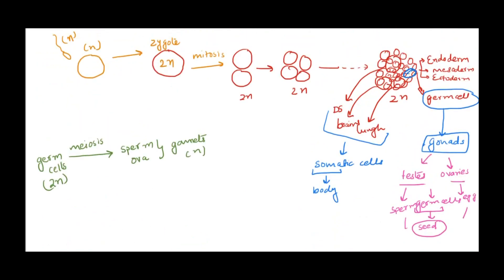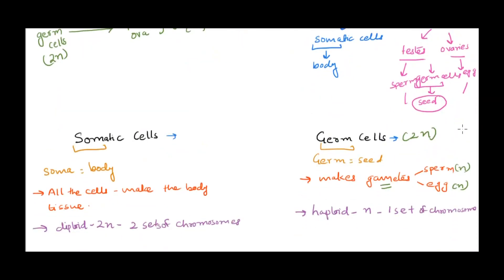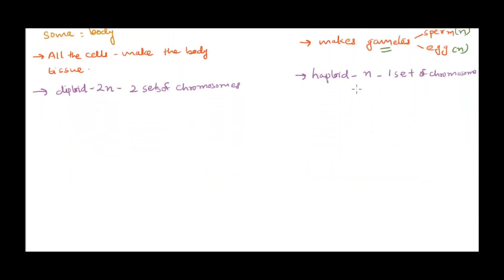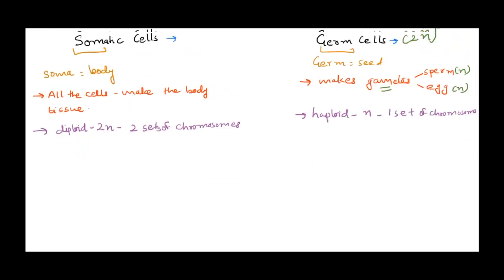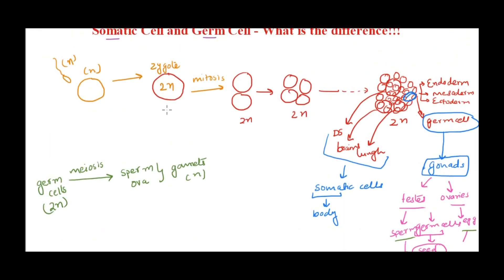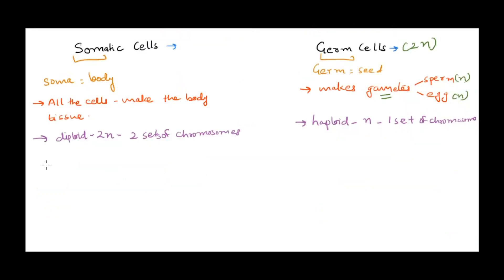To be clear: except for germ cells, all cells are somatic cells that give rise to all types of tissues in our body. Germ cells differentiate in the gonads, and each germ cell is diploid. They undergo gametogenesis — the meiosis process — to give you gametes, sperm or egg, which are haploid with one set of chromosomes. That makes sense because we need a diploid organism, so they fuse to give the diploid zygote.